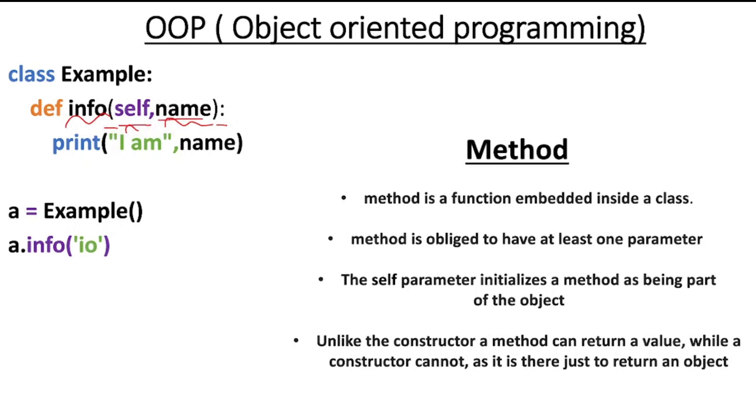Then we will utilize the print function to print the 'I am' string in our console as well as the name parameter. Then outside our class we will instantiate our class, so we will create an object called a. We have a equals to Example with empty parentheses.